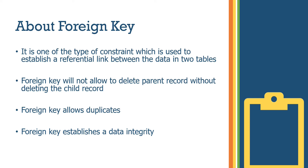When we use a foreign key, it links two tables — a parent table and a child table. You cannot delete a parent table record if child table records exist. One key point: foreign key allows duplicate values, but primary key does not allow duplicates.